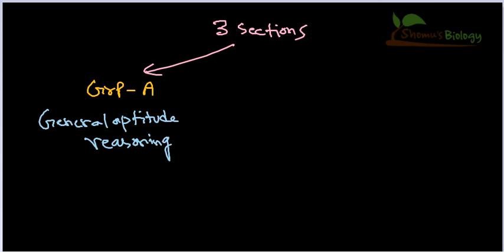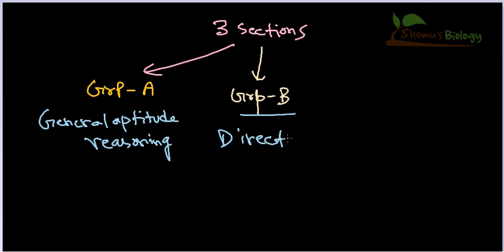The second section is Group B. I designate Group B as a 'mug up' section because they ask direct questions here. For example, from biology they can ask what kind of cell is present in the upper region of the stomach that helps in digestion, and give you four options to choose from.